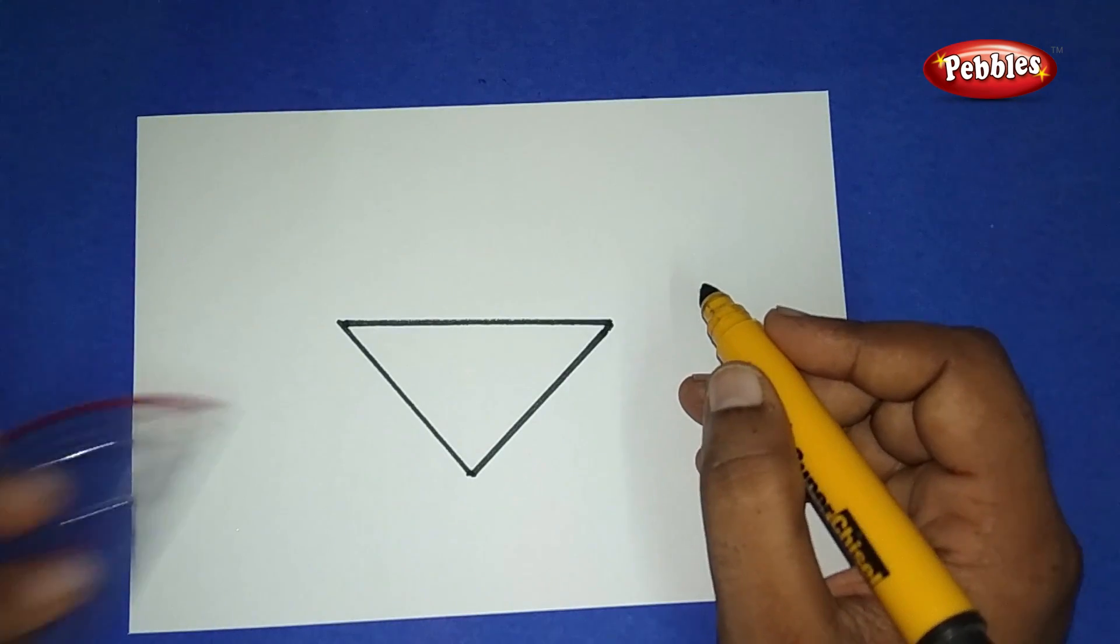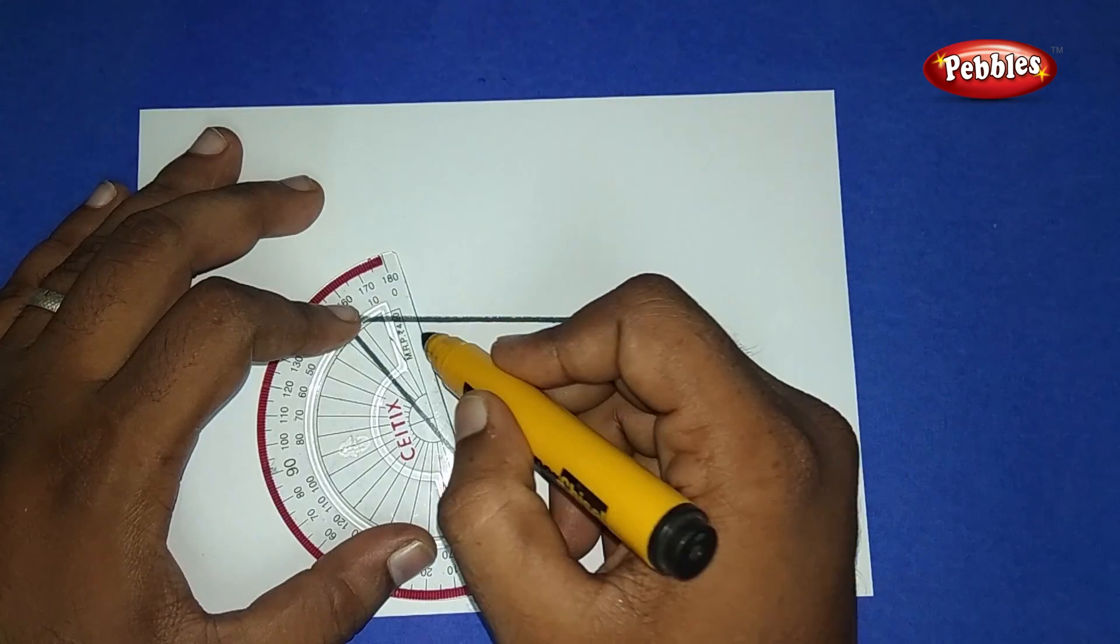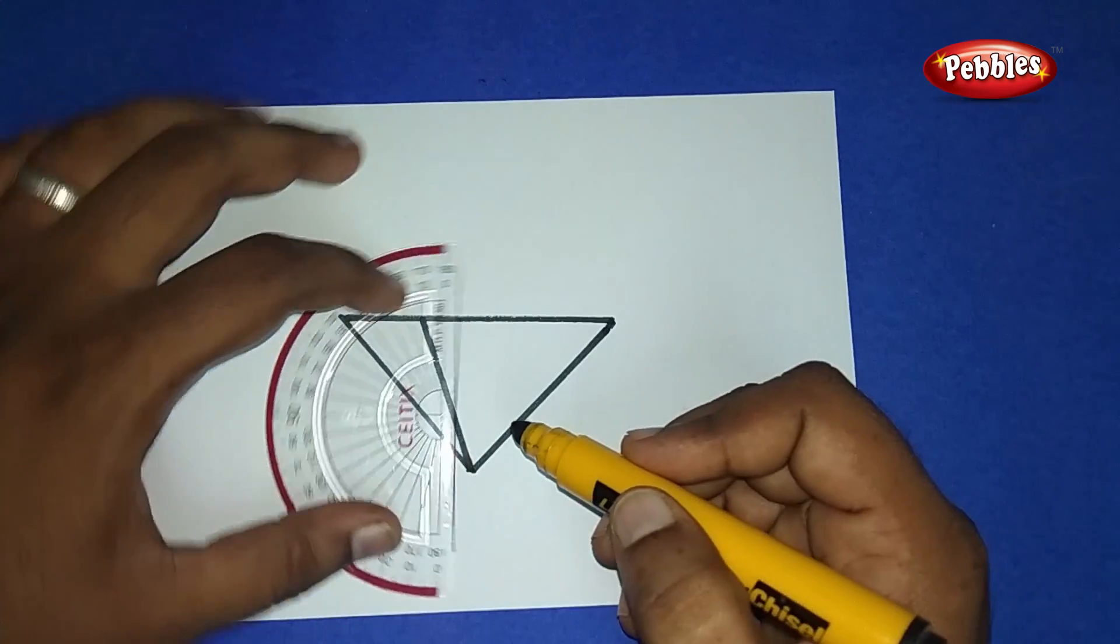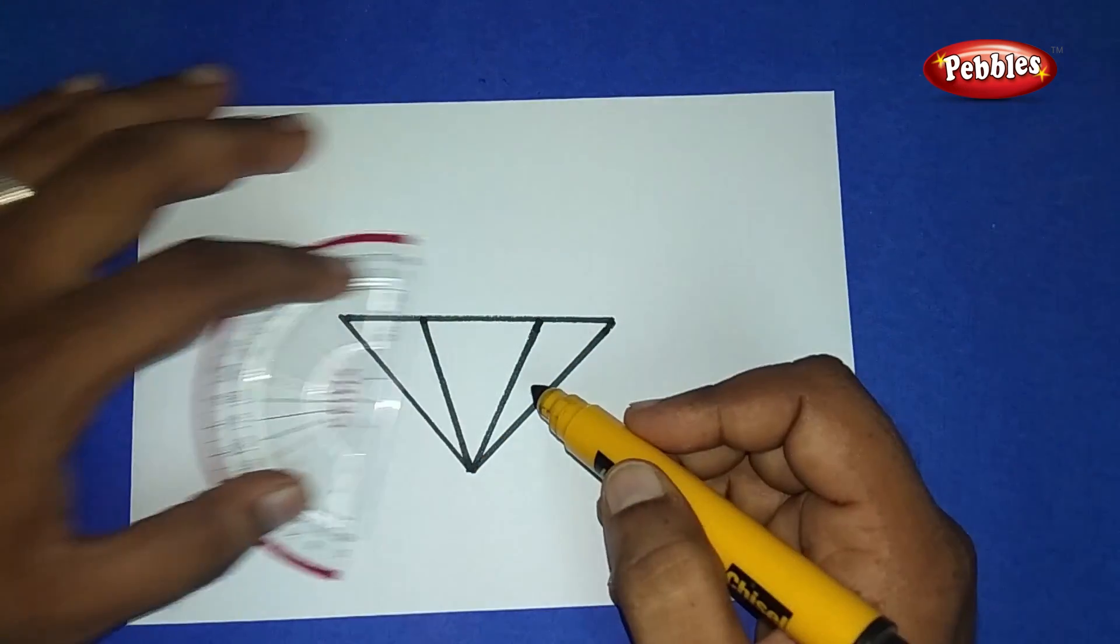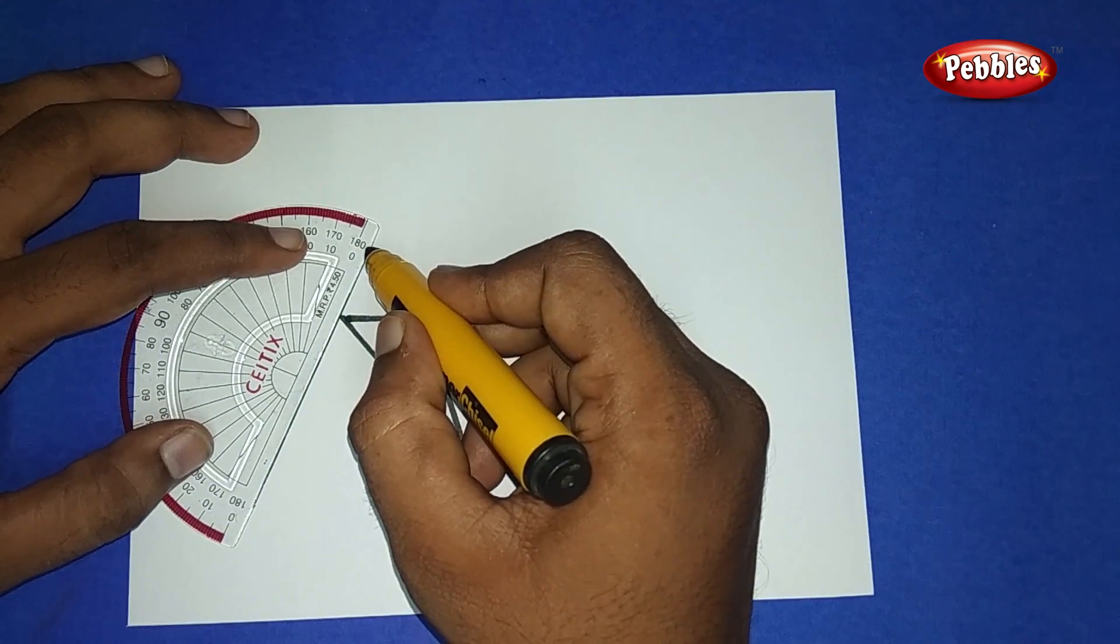This looks like a triangle. Now from the center at the bottom part, draw two slanting lines. Again, at the top on both corners, draw two slanting lines.